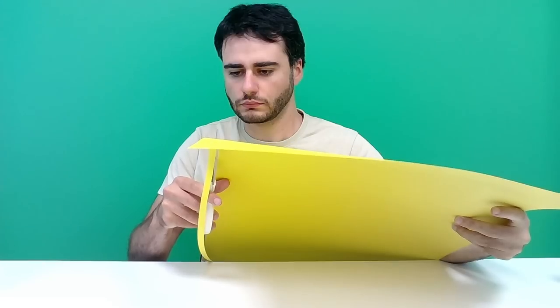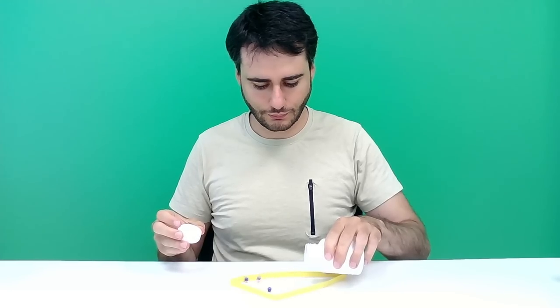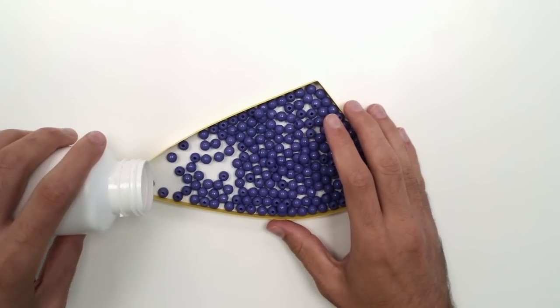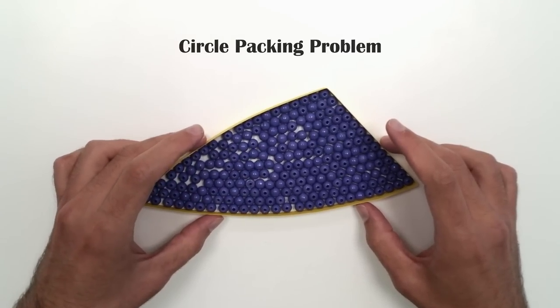Let's experiment a bit. The circle idea sounds nice, but if it doesn't agree with experiment, it's wrong. I'm using this miniature setup here and to measure the area I just count the purple beads inside. This touches on the circle packing problem, but we won't get into that today.